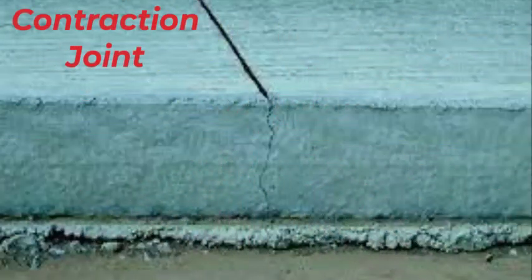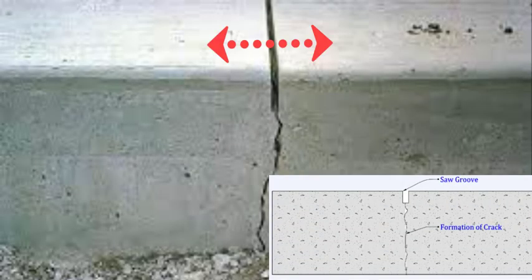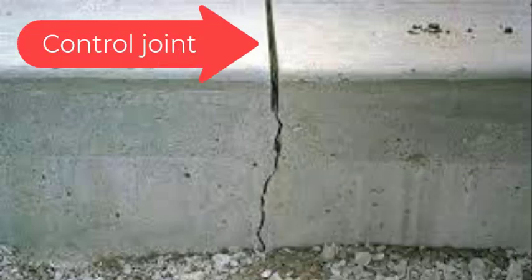Contraction joints are the joints provided to prevent the excessive cracks, due to shrinkage and contraction of concrete material. These joints are also called control joints.